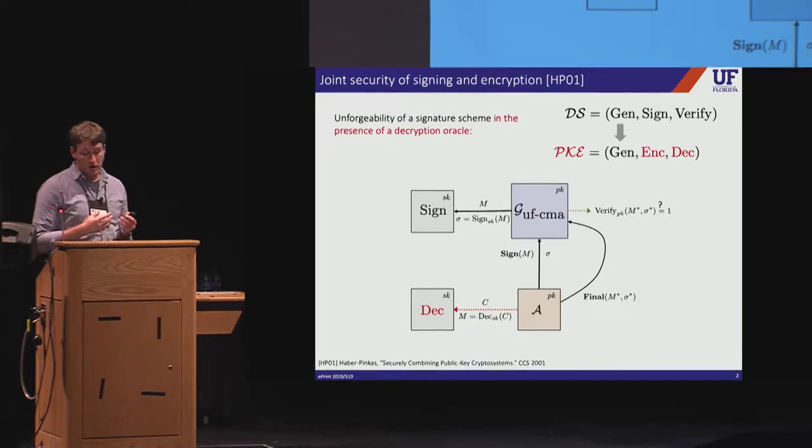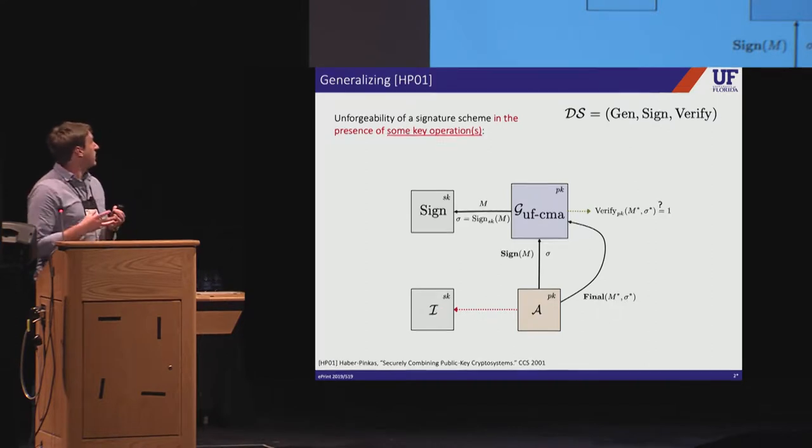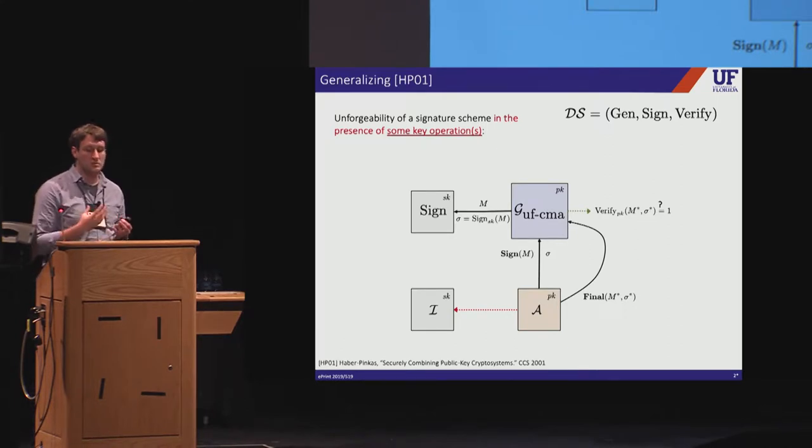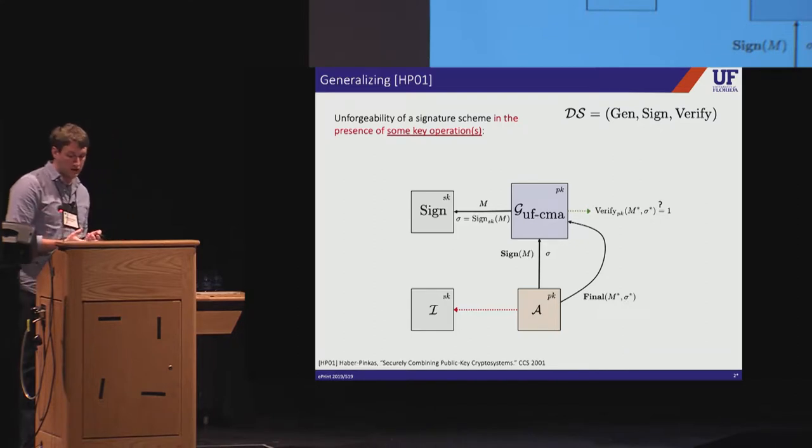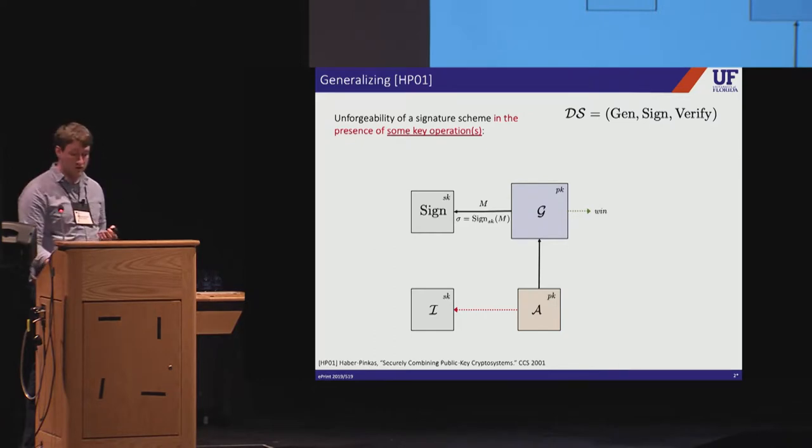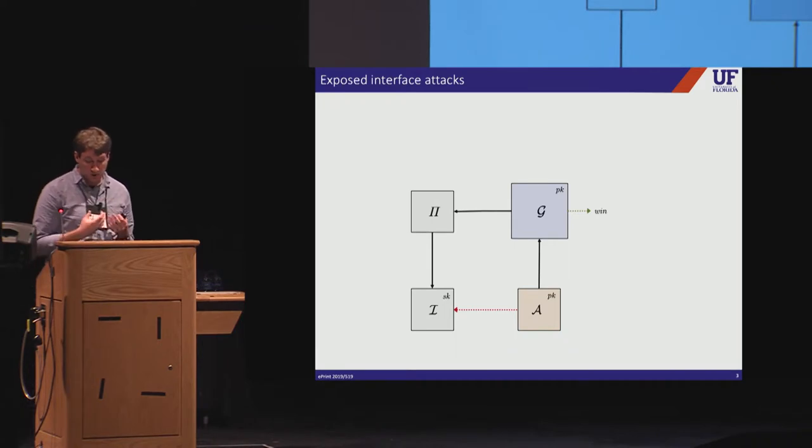So this type of key reuse is pretty common, signing and encryption. For example, a TLS server might use the same RSA key pair for both key encapsulation and signing Diffie-Hellman key exchanges. But the scope of key reuse potentially is much larger in modern systems where applications interact in very complex ways that prior work just hasn't envisioned. So it's natural to consider how we might generalize the setting of Haber and Pincus. For example, what about UF-CMA security in the presence of other key operations? Of course, we can consider security properties other than UF-CMA, and we can generalize this more by thinking of just replacing the signature scheme with a generic primitive protocol.